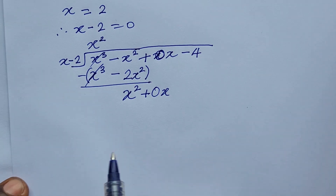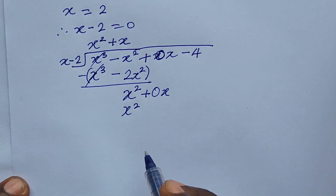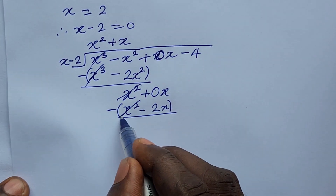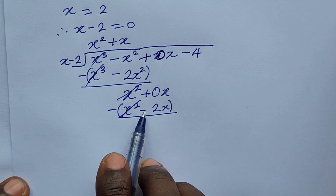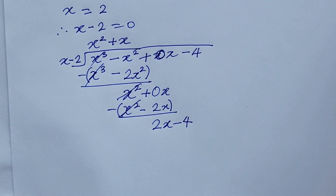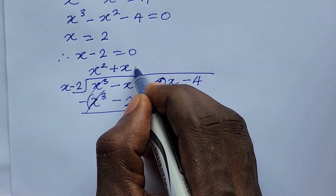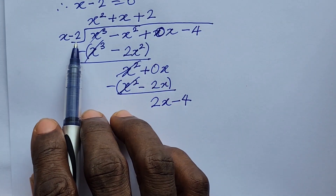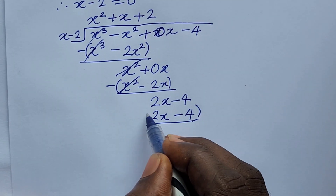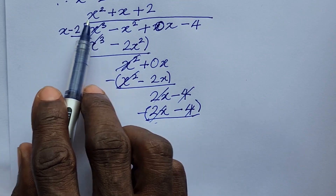We continue: use x to divide x squared, giving x. So we add plus x to the quotient. Multiply to get x squared minus 2x. Subtract again — the x squared terms cancel, leaving 0x plus 2x, giving 2x. Bring down the last term, which is minus 4. Divide 2x by x to get plus 2. Multiply: 2 times x minus 2 gives 2x minus 4. Subtract, and everything cancels — remainder is zero.